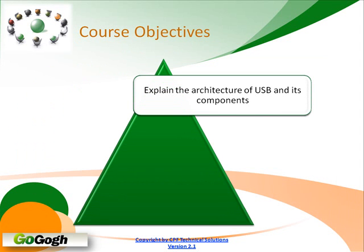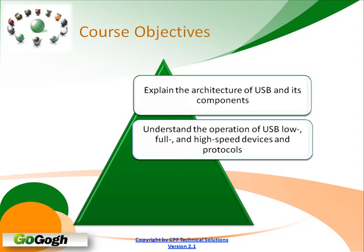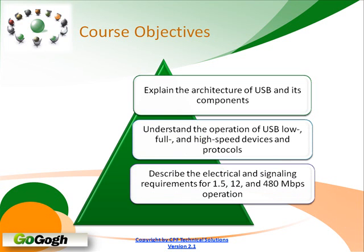One of the objectives in USB 2.0 is to look at the architecture of USB and the components that make up USB. You should have a full understanding of the operation at the three speeds in USB. And you should be able to understand and describe the electrical signaling requirements for all three speeds: 1.5, 12, and 480 megabit per second operation in USB.